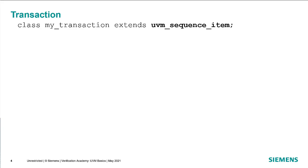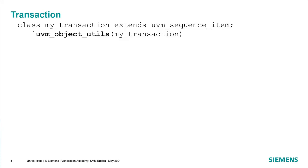A user-defined transaction class extends from UVM sequence item — not directly from UVM transaction — because UVM sequence item has additional infrastructure to allow transactions to be communicated between the sequencer and the driver. So there's no reason to use UVM transaction directly. We extend my_transaction from UVM sequence item and register it with the factory using the UVM object utils macro, since these are data objects, not components.